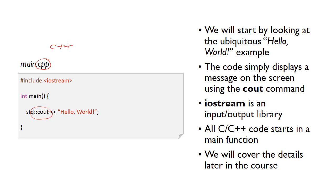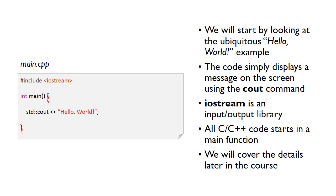The cout command is actually part of the input/output library called iostream. So to use this command we need to include iostream. Iostream is a library — we need to include it to be able to use cout. All C++ code starts in a main function, so we always have this main function. The start of the function is the open curly bracket and the end is the close curly bracket, so our code goes inside this main function.